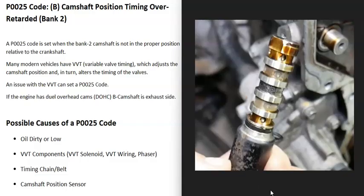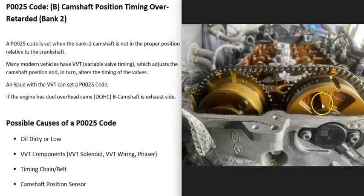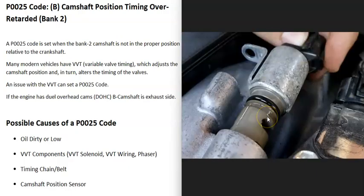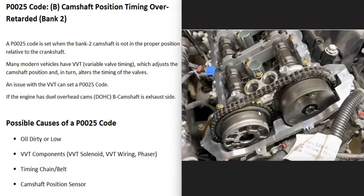Variable valve timing components include the VVT solenoid, the wiring going to it, and what are called phasers or actuators located at the front of the cam where the timing chain or belt rides. If there's any problem with that phaser on the bank 2 exhaust camshaft, that could cause issues. Oil flows through all these variable valve timing components, which is why really dirty or low engine oil can trigger a P0025 code — the oil allows these components to adjust the timing.